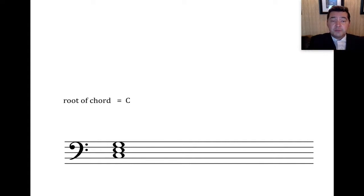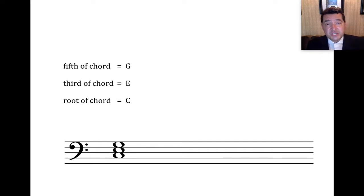Next, we have the note E, and E is a third above C, C-D-E. And so, E is the third of the chord C-E-G. Finally, we have the note G, and G is a fifth above C. We have C-D-E-F-G. And so G is called the fifth of the chord. If I ask you what member of the chord is G, you would say G is the fifth of the chord C-E-G.